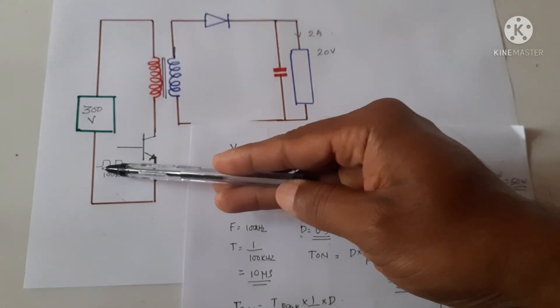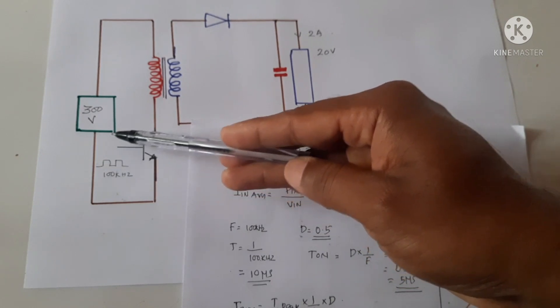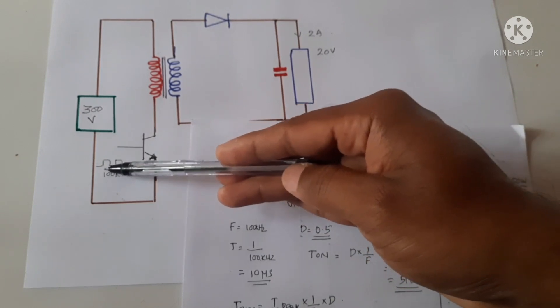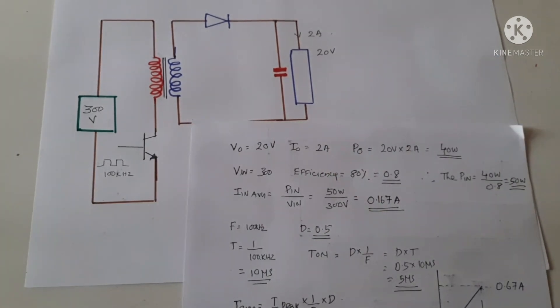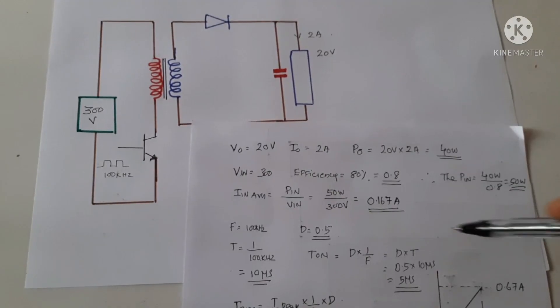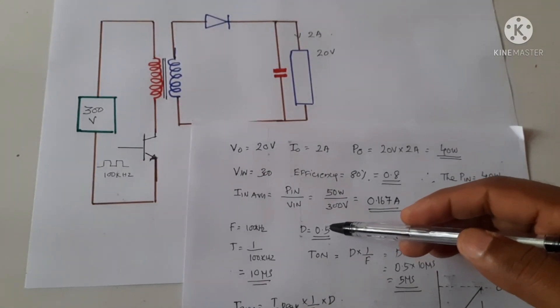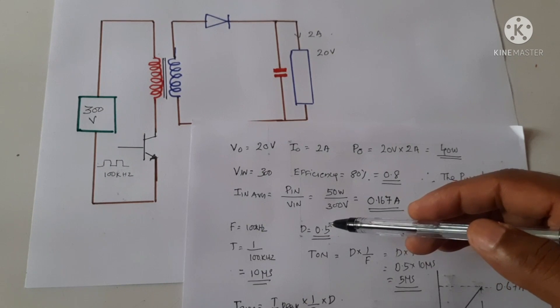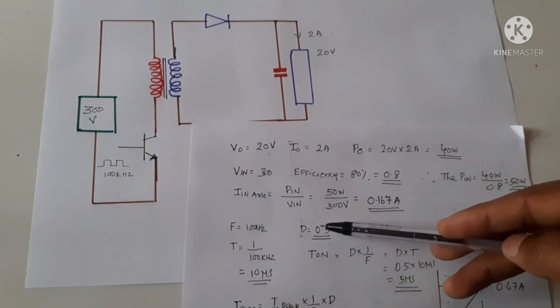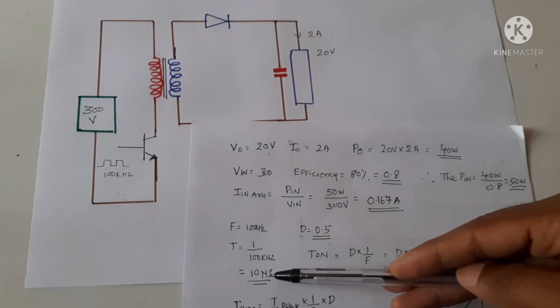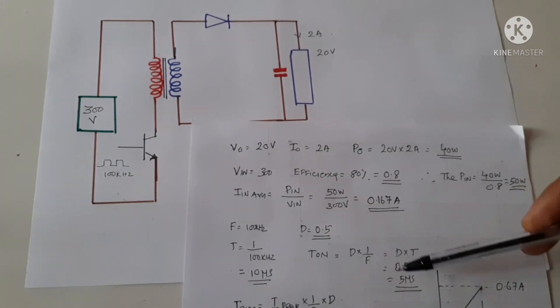That means the time it is on and the time it is off is 10 microseconds total. And as we said the duty cycle is 0.5, that means half the time, 0.5 times 10 microseconds equals 5 microseconds is the on-time.